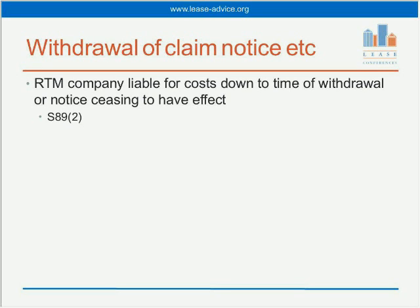If the notice is withdrawn, cost liability leads up to the time the notice is either withdrawn or ceases to have effect — as Section 89, Subsection 2 says. In a relevant case, the RTM notified the tribunal of its decision to formally withdraw its application. The tribunal confirmed the withdrawal and informed the landlord. But the landlord said the RTM was still responsible for costs. The tribunal found the RTM was liable for costs between the date of the claim notice and the date of the application to the tribunal, but not thereafter. However, other tribunals said: cost liability is statutory under Section 88, and simply withdrawing an application without more doesn't bring it to an end. The tribunal must formally dismiss the application — cost liability carries on until the tribunal has formally dismissed it.